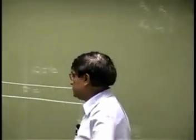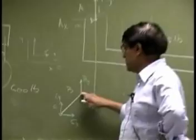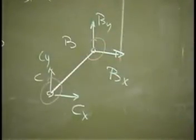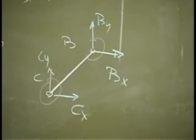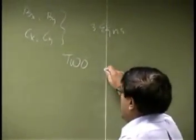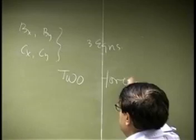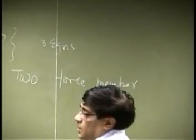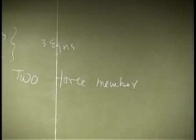First of all, looking at this member, there are only two locations where you have forces on it. It's at point B and point C. So we could identify this as a two-force member, or a member on which forces are applied on two points only.